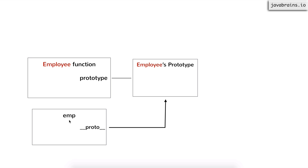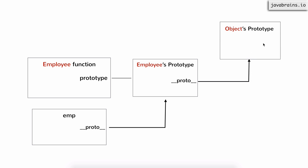If I switch to the diagram, the JavaScript engine first checks this object — does emp have a property called test? It doesn't find it, so it goes to this object and checks again. If it still doesn't find it, this is still an object reference, so the JavaScript engine checking this is no different from checking any other object. If emp.test isn't found there either, that's when it returns undefined. What's important to notice here is that there's actually a third hidden level — a third object that is checked during a property reference. This happens for every prototype, and that is the object's prototype.